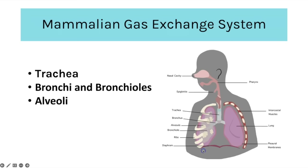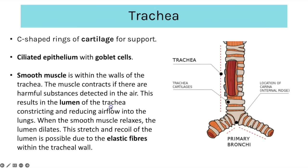We're going to look at those concepts in more detail, starting with the mammalian gas exchange system. The structures you need to be familiar with are the trachea, bronchi, bronchioles and the alveoli. The trachea, also known as the windpipe, has C-shaped rings of cartilage that run all the way down to support it and make sure it stays permanently open so air can flow through.